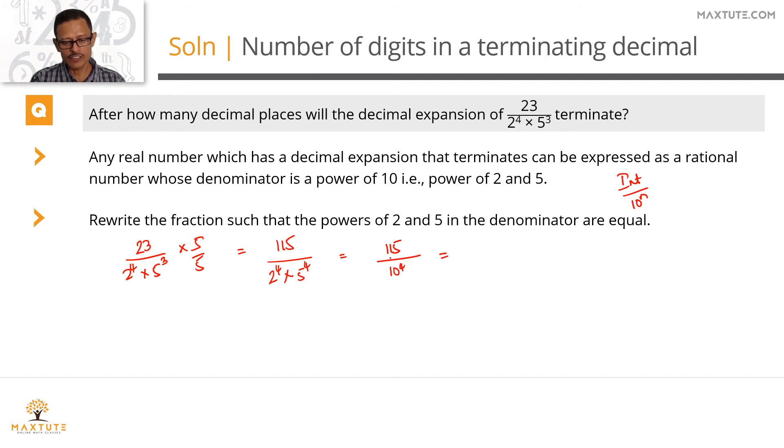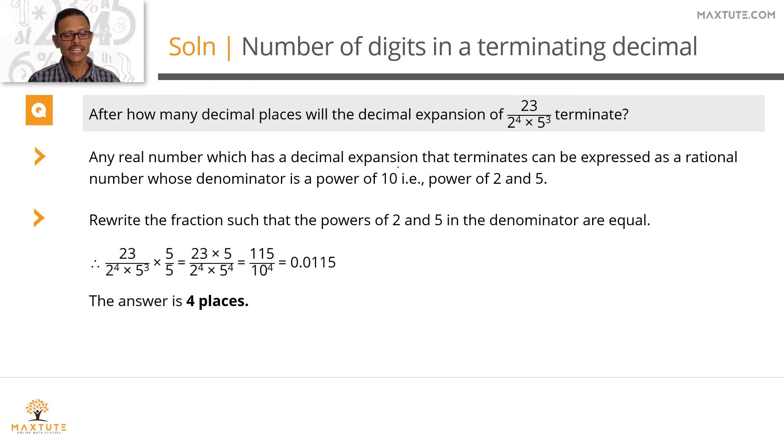Essentially, the value of 115 by 10 power 4 is equal to 0.0115. So the answer is 4 places. Quickly summarize it in a printed form. We are rewriting this fraction to have the powers of 2 and 5 as the same value in the denominator. We are going to multiply and divide it by a 5. Therefore, we have 23 into 5 divided by 2 power 4 into 5 power 4 which is 115 by 10 power 4 whose value is 0.0115. So it terminates after 4 places.